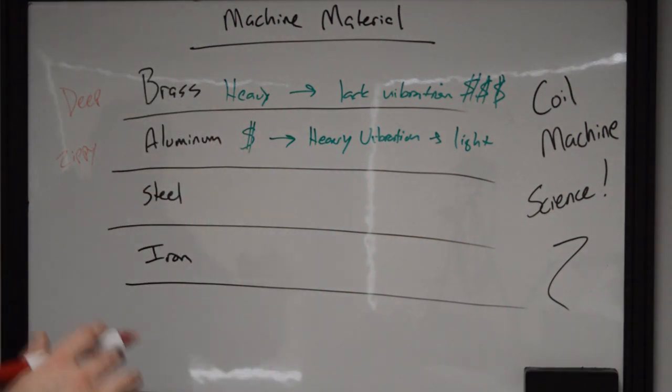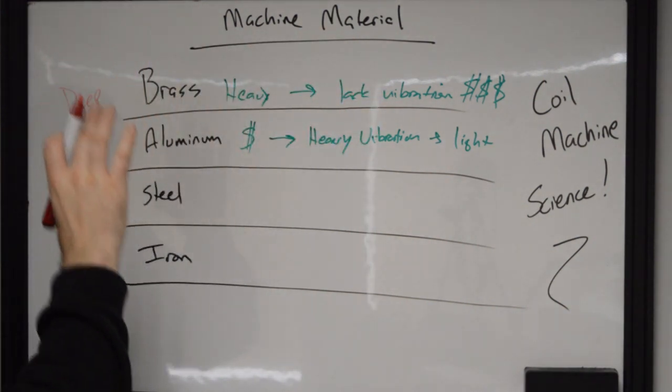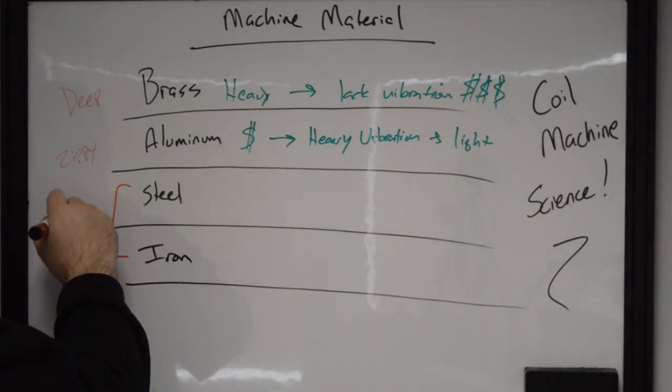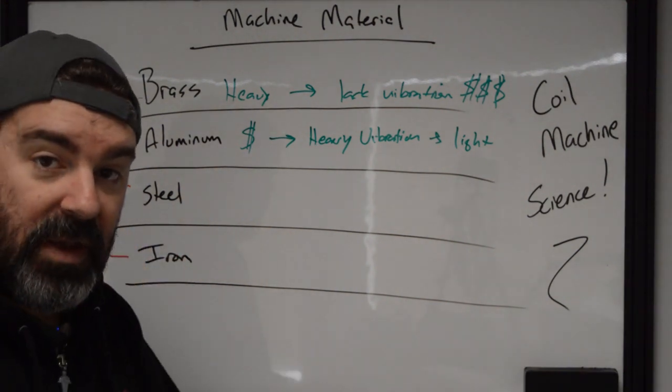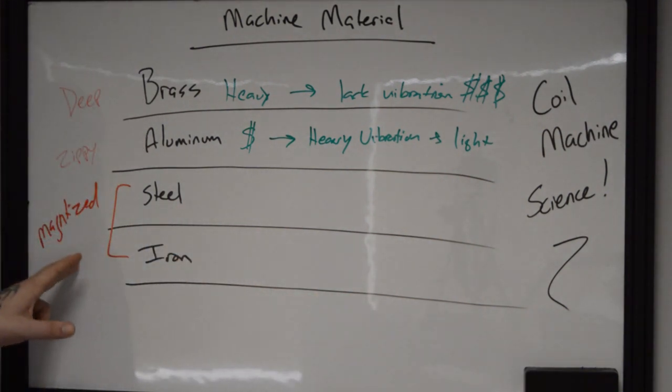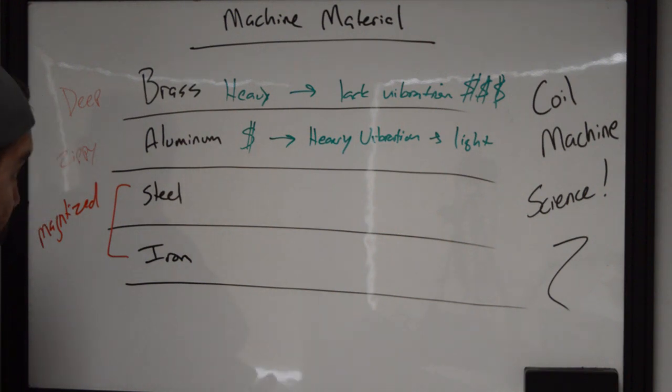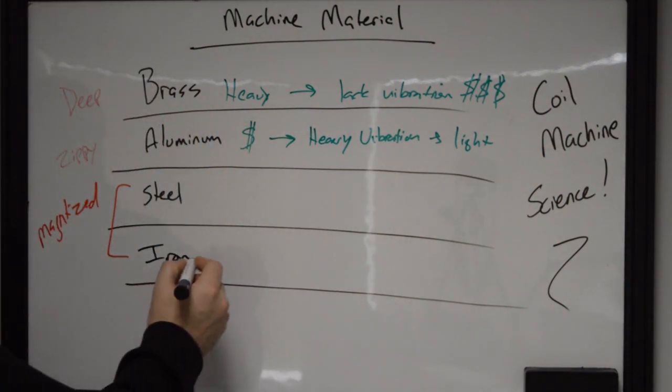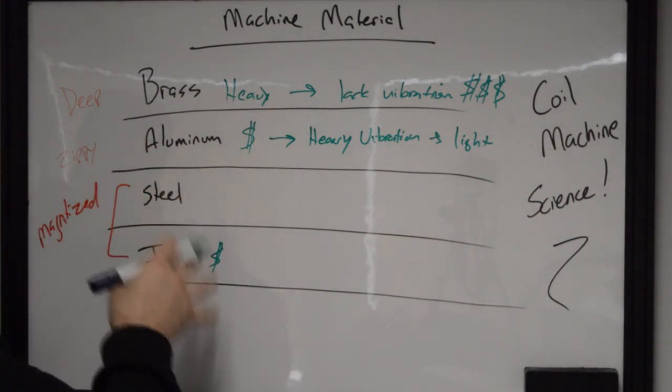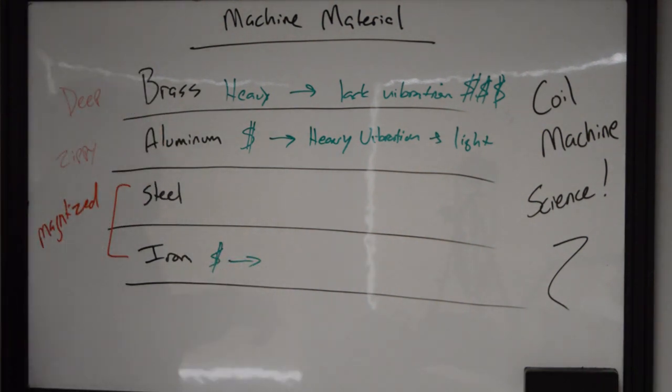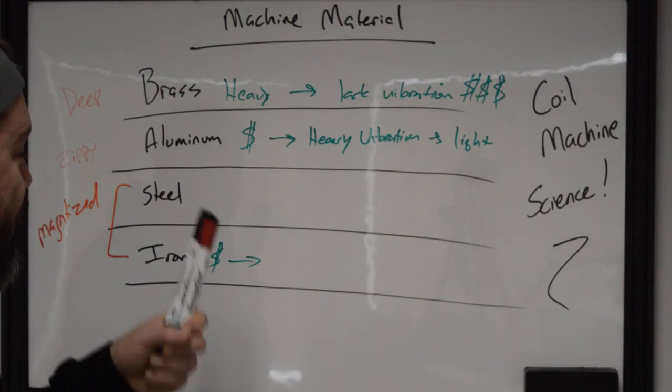So last two steel and iron. Now we have another thing that we hadn't talked about with these two that we have to worry about because they're ferrous materials. These two can be magnetized. Now, if you're running an electromagnet next to a piece of metal for a long period of time, it will become polarized. It'll actually grab a magnetic charge. So it's something to notice with these ones is that they're kind of in between with everything else.